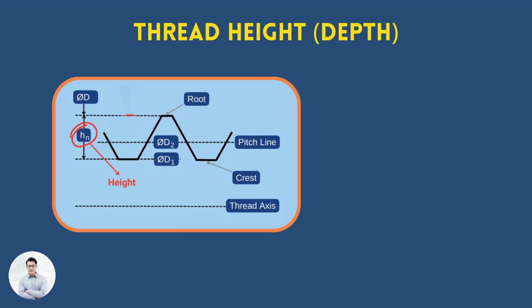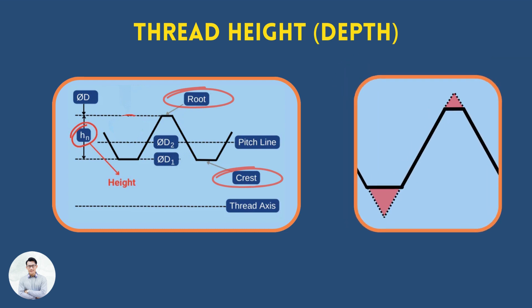The thread height, also called thread depth, is the distance between the crest and the root. It is a reference dimension without a tolerance. It is the result of the crest and root truncations, which are usually controlled by a tolerance.